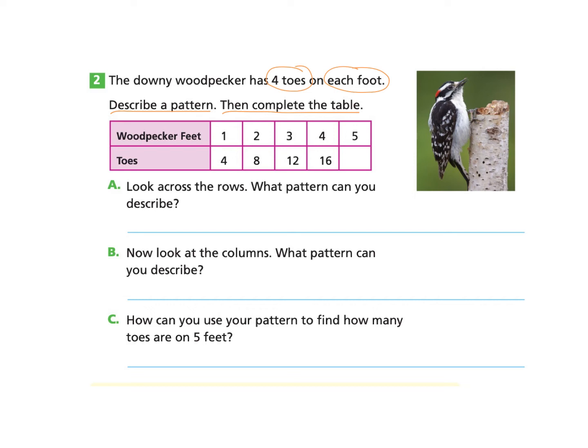Part A asks us to look across the rows. What pattern can you describe? So if you'd like to pause and really look at this again, you may or just follow along with me. At the top here, woodpecker's feet, I'm noticing that each of these numbers up top is increasing by one. So here we have one, two, then we go to three, then we go to four. So I'm just adding one foot every time, and I'll get the next number. Now I will look at the toes. I'm noticing that when I go from four toes to eight toes, I need to add four. I'll start with four, five, six, seven, eight. I added four toes to get to the next number.